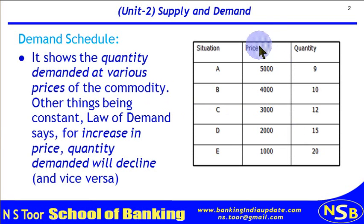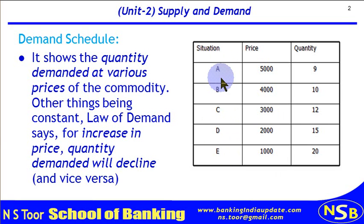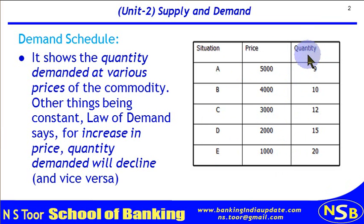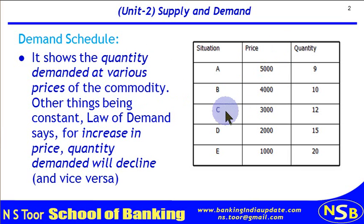Let us see this table. In this table, 5 different situations are given with 5 different combinations. Here we are showing the price, and here we are showing the quantity. A table which shows the quantity demanded at various prices of a commodity is called a demand schedule.